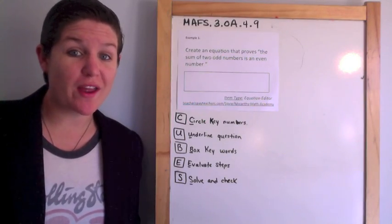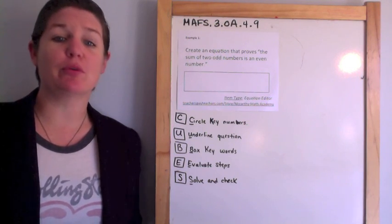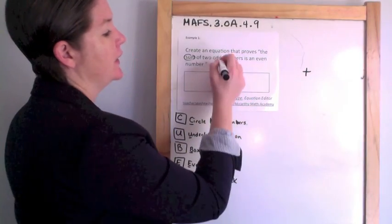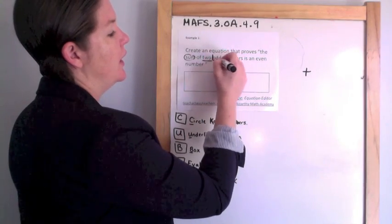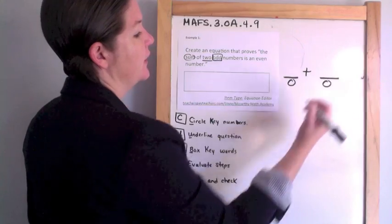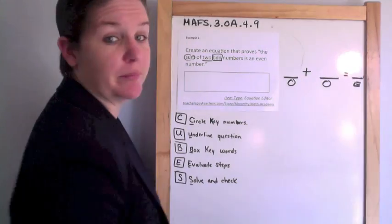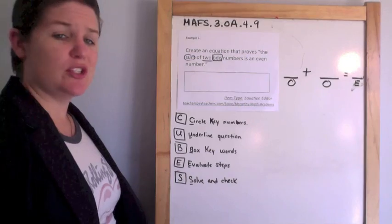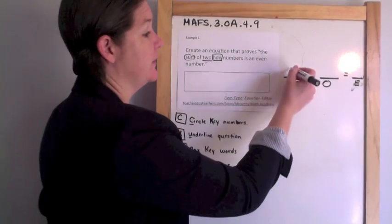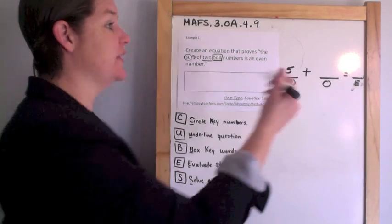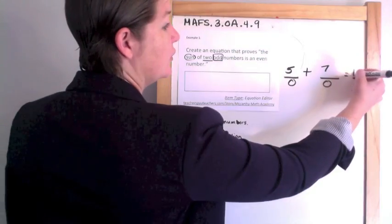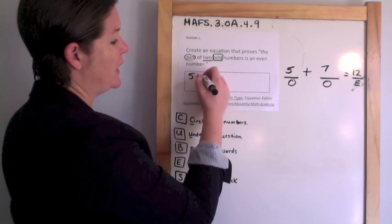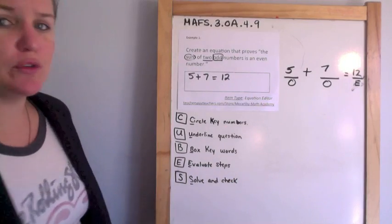Let's kick off with example one. It says: create an expression that proves the sum of two odd numbers is an even number. Sum means we are adding two odd numbers, so we need an odd number plus an odd number, which will equal an even number. Give me an odd number — five. Give me another — seven. Five plus seven is 12, and that is an even number. We just proved it with your help. Here is my equation with my equal sign to prove it.